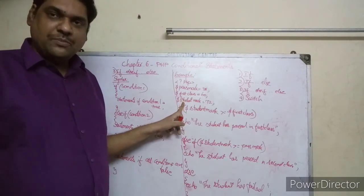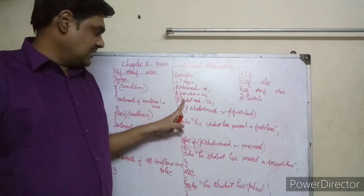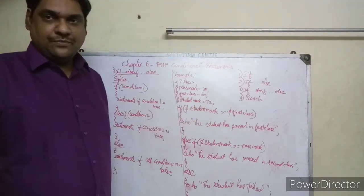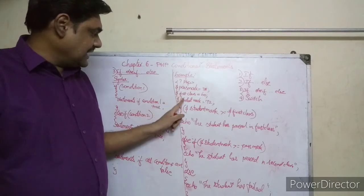Dollar student_mark will store 72 inside it. So pass_mark first class, student_mark variables.